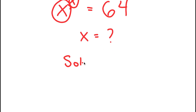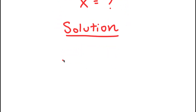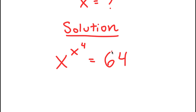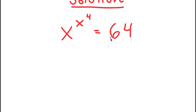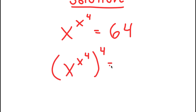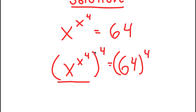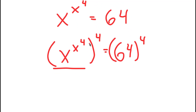For my solution, I'm going to first start by rewriting my equation: x to the power of x to the power of 4 is equal to 64. To solve this, what I'm first going to do is take the power of 4 on both sides. This may seem kind of confusing because this term already has three powers, including the four — but there is a use for this.